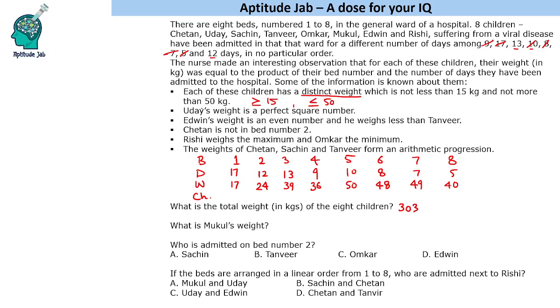Now let us solve for this part also because we can answer one question but in order to answer others we have to fill this. Uday's weight is a perfect square number. Now perfect square out of these is 36 or 49. Okay, Edwin's weight is an even number and he weighs less than Tanvir.